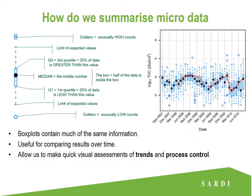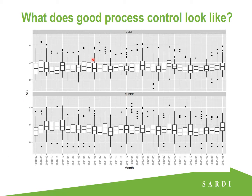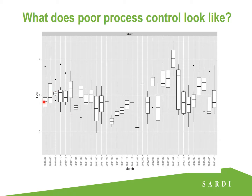By measuring the variability, you're able to make a comment on the level of process control at your establishment. When we refer to good process control, we're really talking about consistency. Here we can see an example of a plant that has very consistent month-to-month counts and very short boxes, which indicates that within each month their counts are very consistent as well — and they're doing that for both beef and sheep. That's a really good example of a plant with good process control. If we contrast that with this other plant, we can see that between each month their counts fluctuate hugely, and they have a mixture of very short and very tall boxes — a surefire sign that their counts are varying hugely within the month as well. That's an example of really poor or no process control.